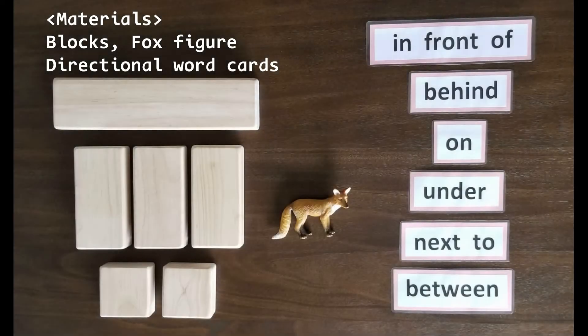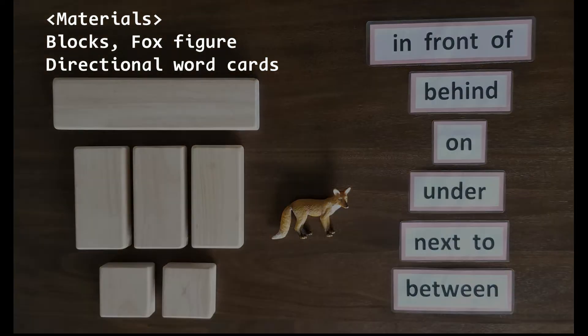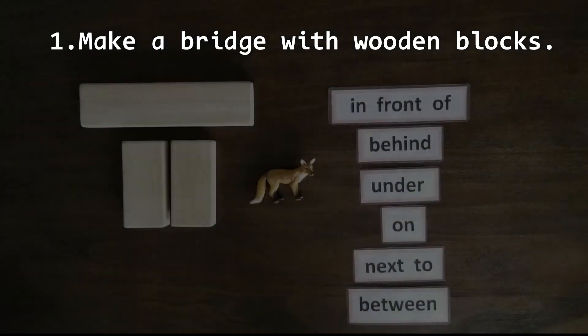As we follow Rosie's journey, many directional words such as past, over, were introduced. In this after-reading activity, children are going to learn directional words.